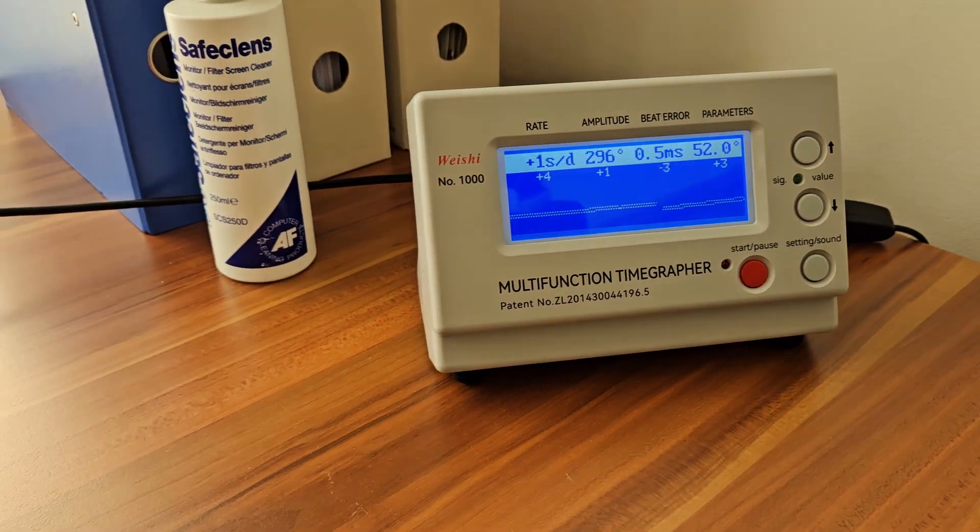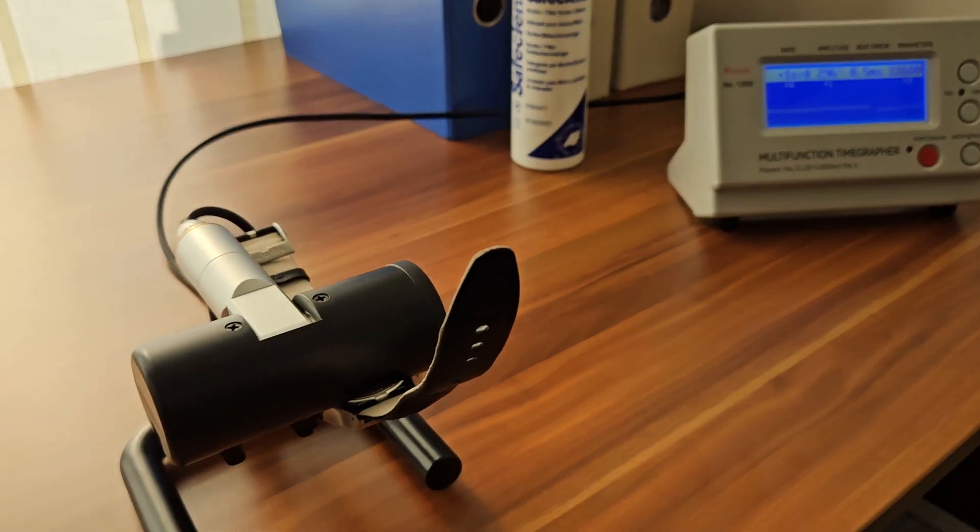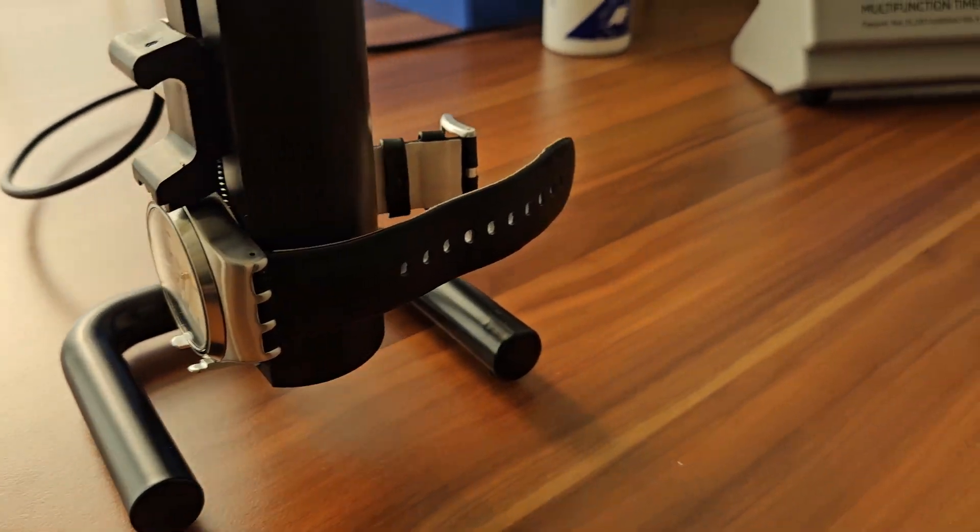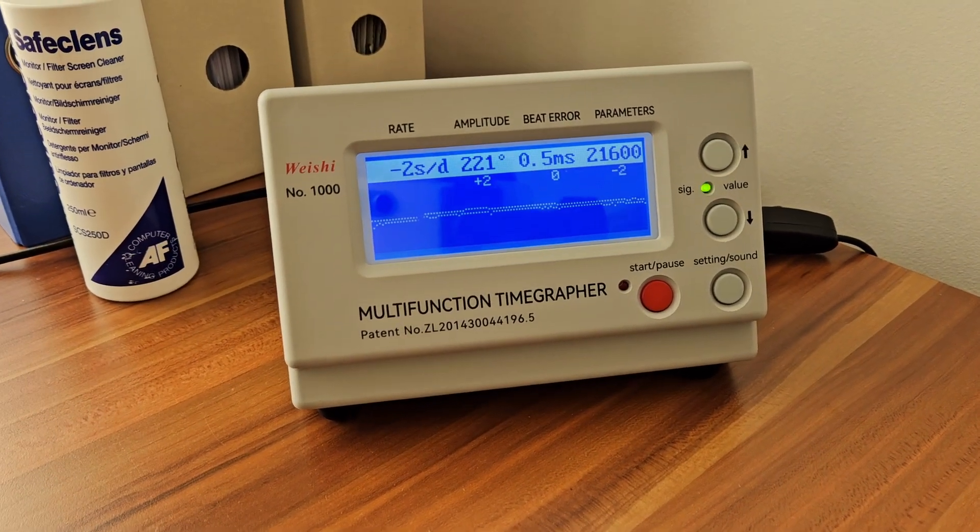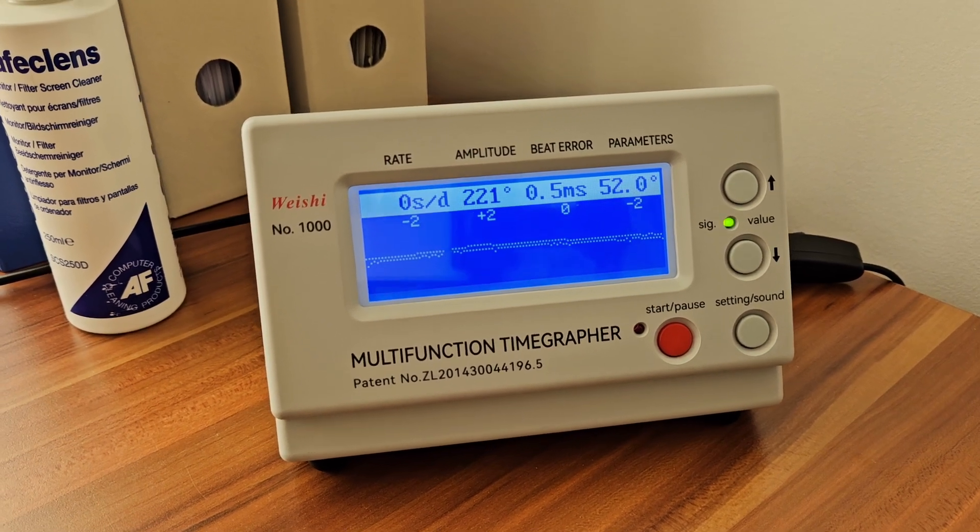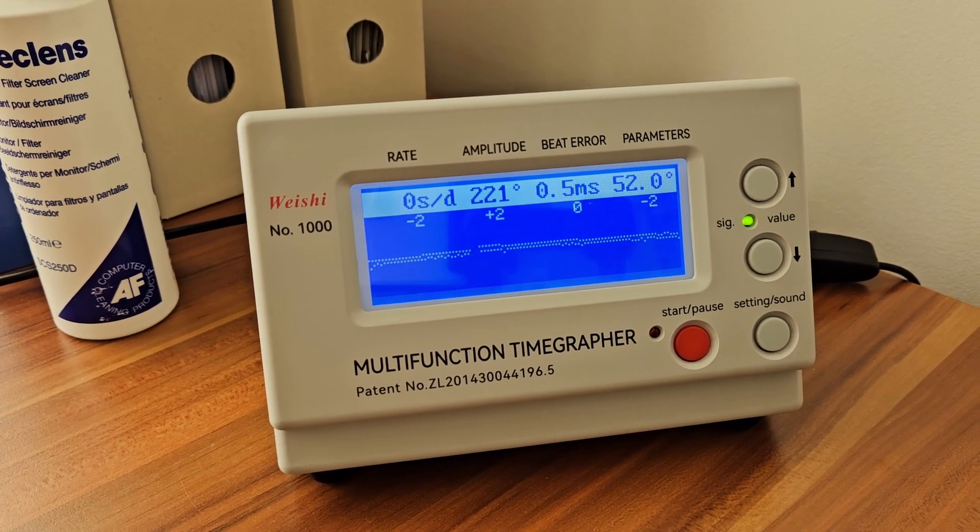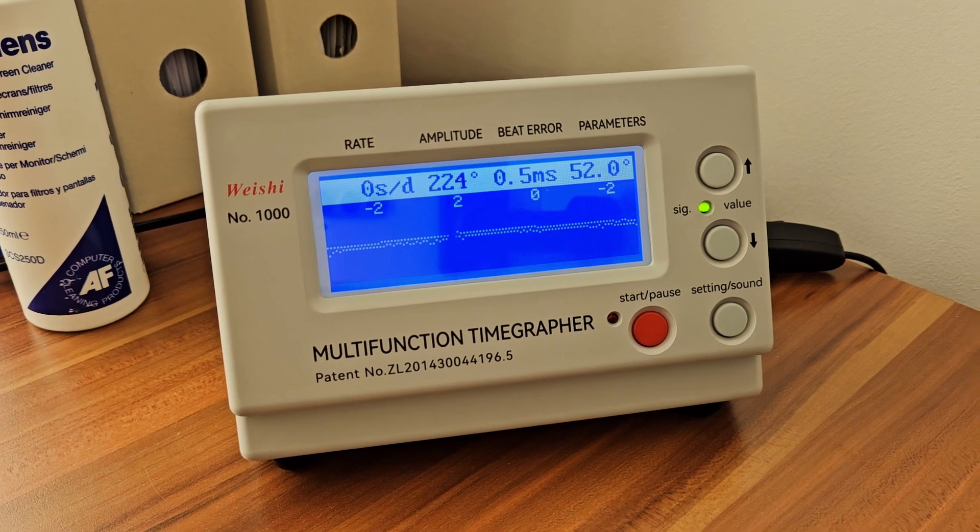The timegrapher results, let's say, decent. I couldn't find the lift angle of the ETA C10 family, so amplitude value is not correct. In general, it shows nearly the same beat error in each position and is pretty much expected to have different accuracy in different positions. The best, so far, is in crown-down position.